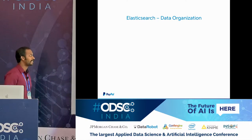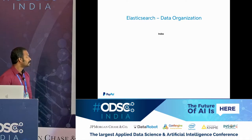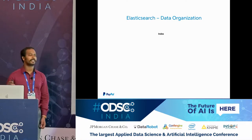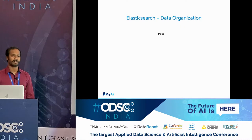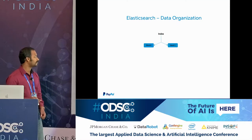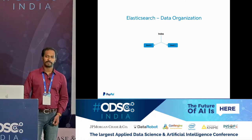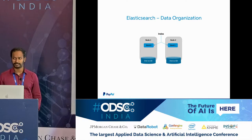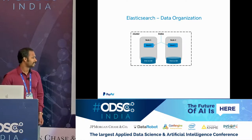How is data organized in Elasticsearch? The index is the main data unit. You can correlate it with a table in a database or a collection in MongoDB. If you have a single index and you need to scale it, you split the index into multiple shards. The multiple shards reside on different nodes, each backed by its own disk. Together they form the cluster.